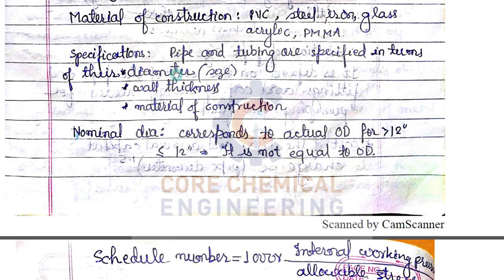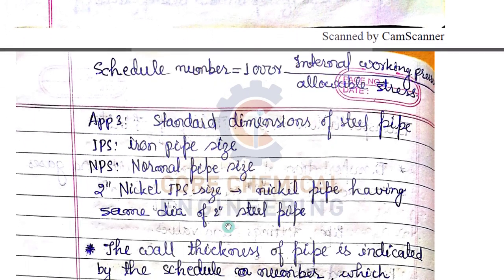Nominal diameter corresponds to actual diameter when your pipe diameter is greater than 12 inches. If the nominal diameter is less than or equal to 12 inches, it is not equal to the outer diameter. So if you are using an 8-inch or 6-inch pipe given in terms of nominal diameter, that nominal diameter will not equal the outer diameter.